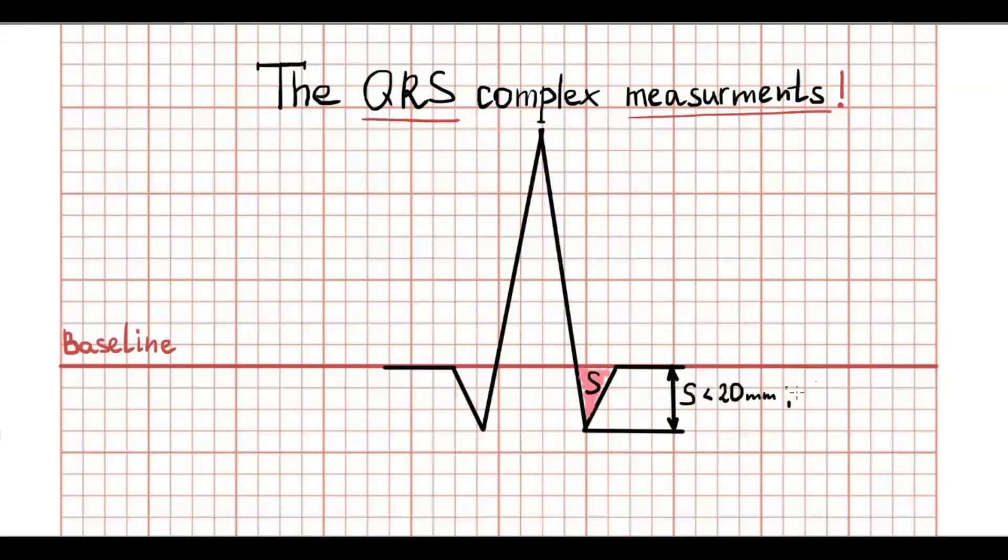Normally, S waves should be less than 20 mm in amplitude in chest leads, and in extremity leads, S wave should be less than 5 mm.